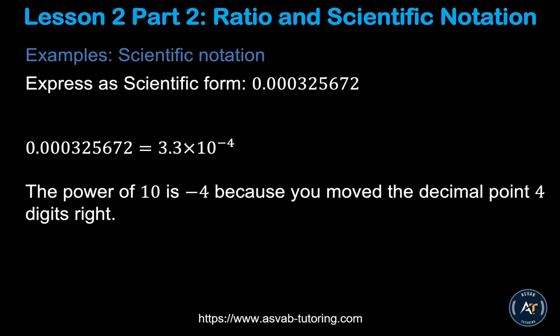For decimal numbers, find the first non-zero digit and place the decimal after it. Count from right to left back to the original decimal position, and that count becomes a negative exponent. For example, with a number like 0.00033, the first digit is 3, so you write 3.3 times 10 to the power negative 4. If you count right to left, you get 1, 2, 3, 4 — so the exponent is negative 4.